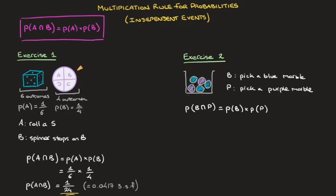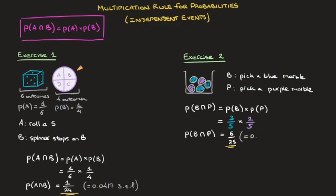Since there are five marbles in total — three blue and two purple — the probability of picking a blue marble is 3 over 5, and the probability of picking a purple marble is 2 over 5. Multiplying these two fractions together, the probability of picking a blue marble followed by a purple marble equals 3 times 2 over 5 times 5, which is 6 over 25. That's the answer — or as a decimal, 0.24.